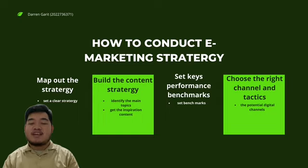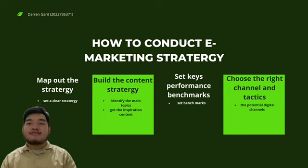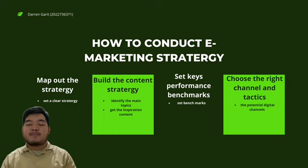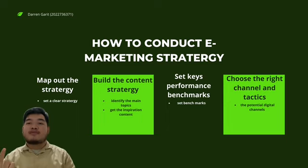How to conduct e-marketing strategies: firstly, map out the strategy, which means the company should set a clear strategy in order to achieve the goal of increasing profits. Secondly, build the content strategy, which means identify the main topic and get inspiration from content — the company should look at other ways of promoting the product. The next point is to set the performance benchmark, and lastly, choose the right channel and tactics, where we should post in the right digital channels such as YouTube, Facebook, Instagram, and TikTok.